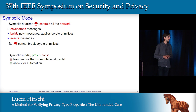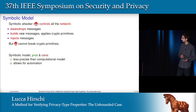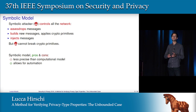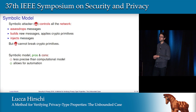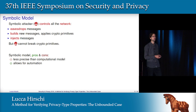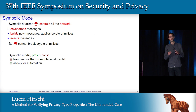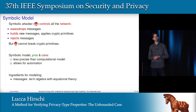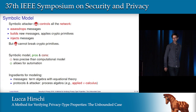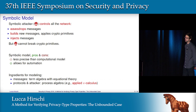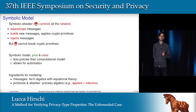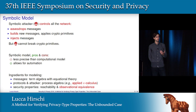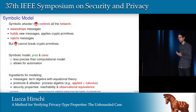So what are the pros and cons of this model? Obviously it is less precise than the computational model with Turing machines, probability, and so on. But on the other hand, this much less complex model allows for automation, so we may have push-button verification tools in this model. For the ingredients of modeling: we use a term algebra with an equation theory for modeling messages and cryptographic primitives. We model the protocol and the attacker in a process algebra — in this work we use applied pi calculus. And we model security properties as either reachability properties or observation equivalences.